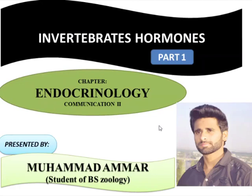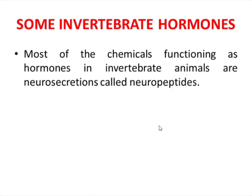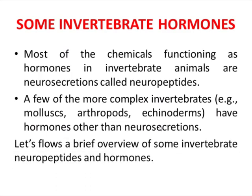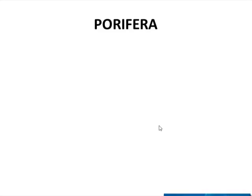Bismillahirrahmanirrahim. Assalamu alaikum everyone, I am Muhammad Ammar and in this video I am going to discuss invertebrate hormones. Invertebrates have chemicals like hormones which are called neuro secretions, such as neuropeptides. Some invertebrates like molluscs, arthropods, or echinoderms have somehow developed hormones and an endocrine system. Let's have a brief overview of invertebrate neuropeptides and hormones.